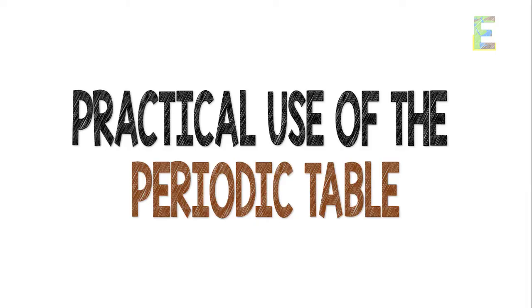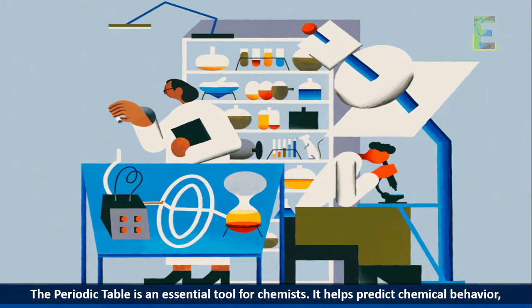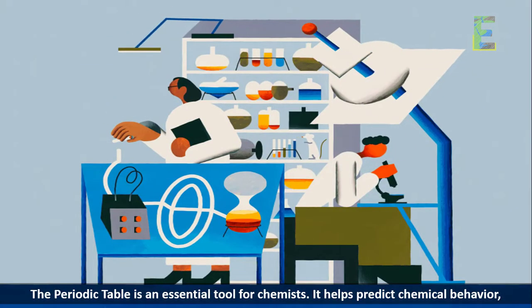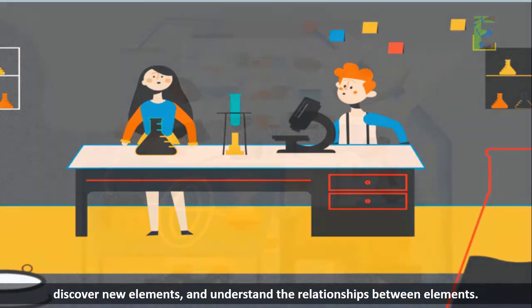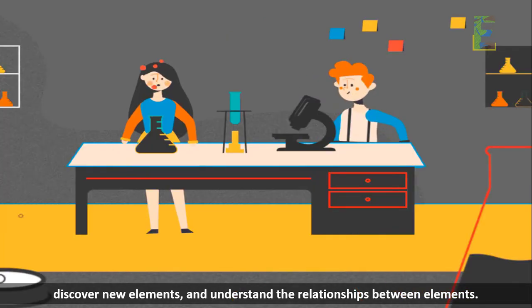Practical use of the periodic table. The periodic table is an essential tool for chemists. It helps predict chemical behavior, discover new elements, and understand the relationships between elements.